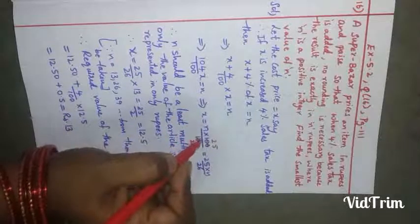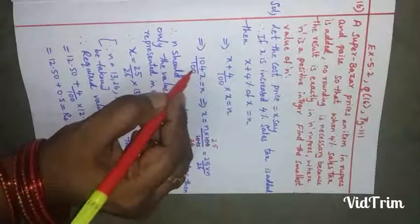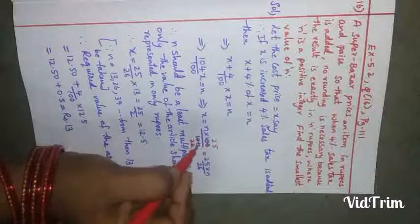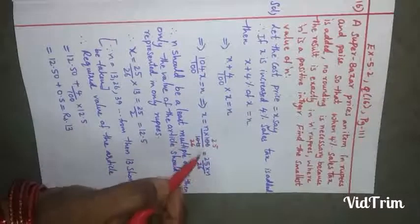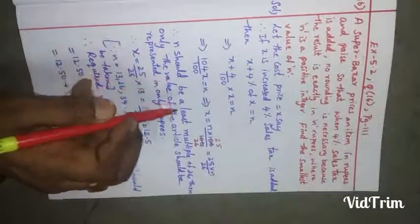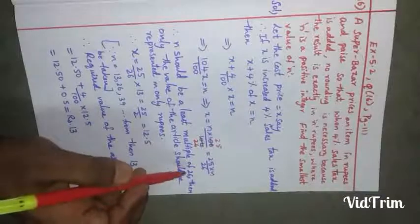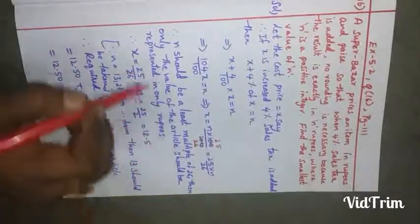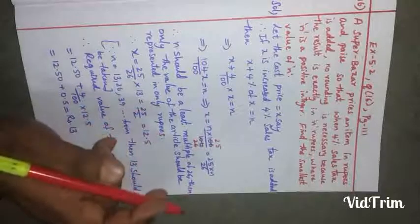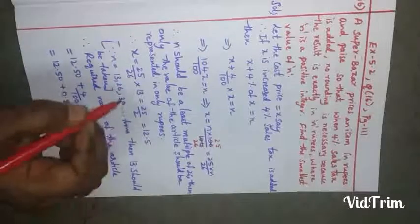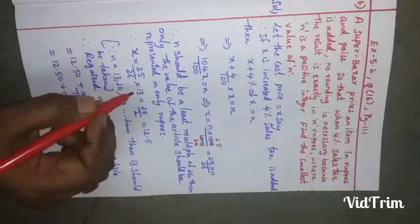This implies x equals n into 100 by 104. By simplification, x equals 25n by 26. Therefore n should be a multiple of 26, because only then will the value of the article be represented exactly in rupees. The least multiple of 26 is 26 itself.